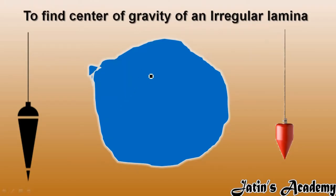How to find the center of gravity of an irregular lamina. We can find the center of gravity with a plumb line. This is actually a plumb, so we will make a plumb line.